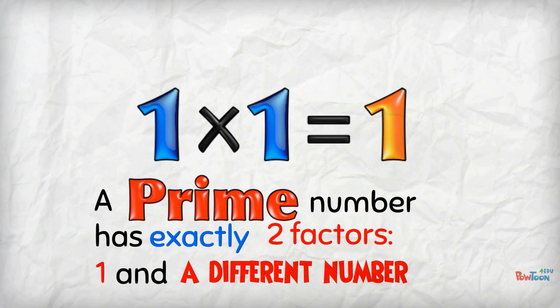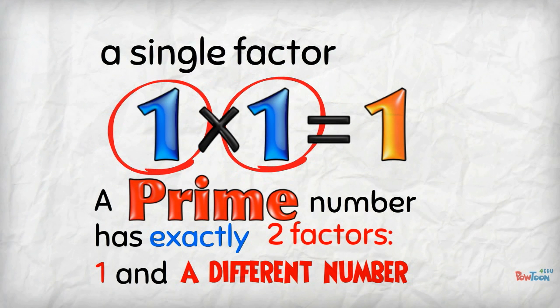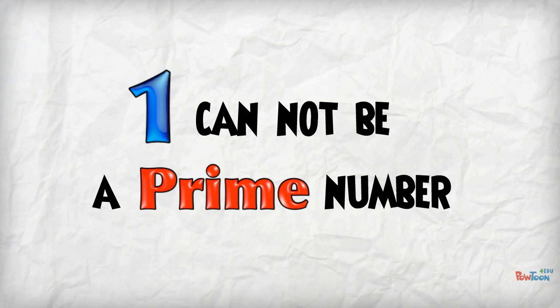How many factors do we have in this equation? We have 1! A single factor, the number itself. So 1 cannot be a prime number.